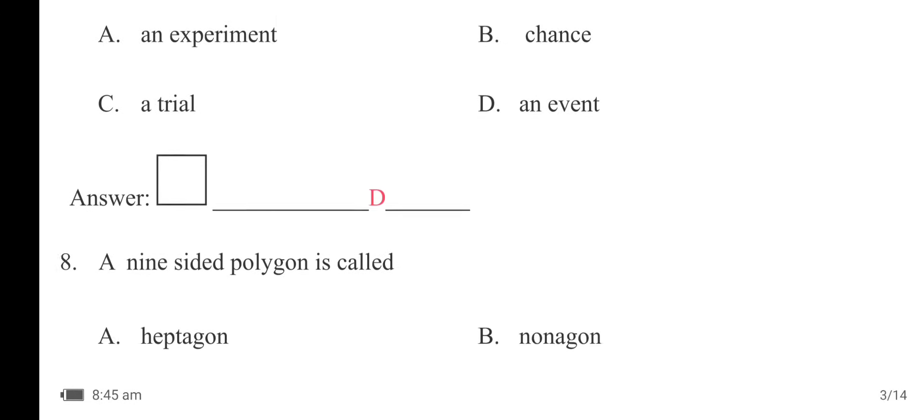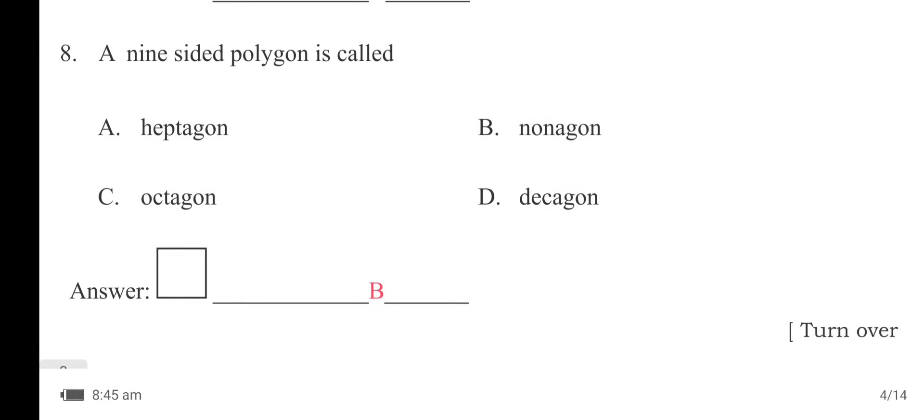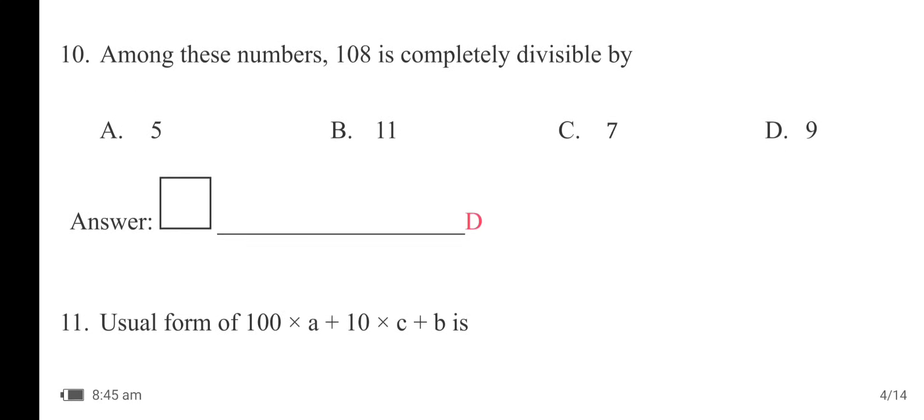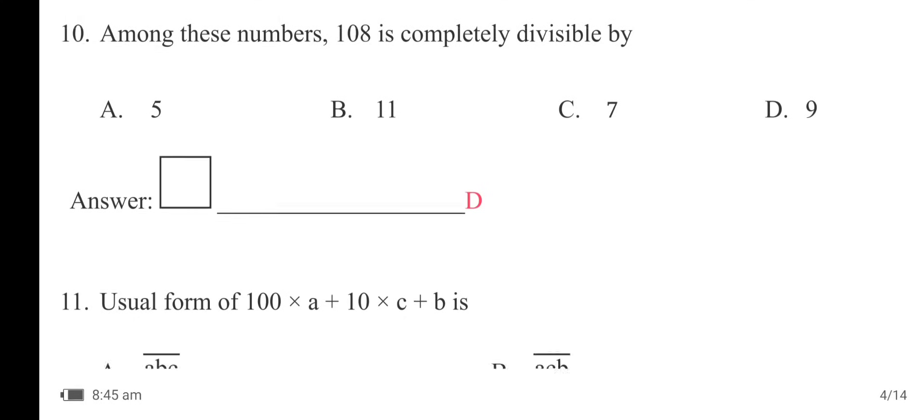A nine-sided polygon is called option B — nonagon. With the usual notations, Euler's formula for a polyhedron is option C: F + V = E + 2. Among the numbers given, 108 is completely divisible by 9 — option D is the right answer.